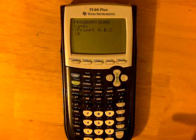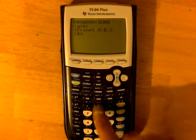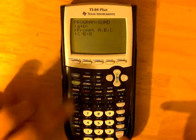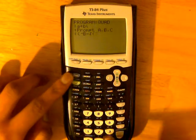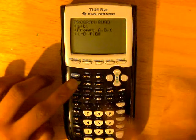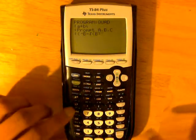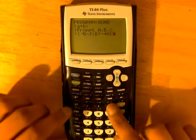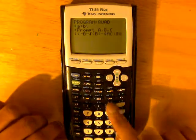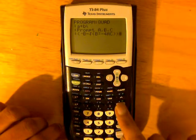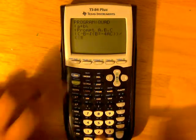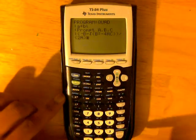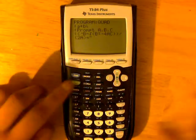Then click Enter. And now, parentheses, negative B minus square root of B squared, so Alpha-B squared, minus 4, Alpha-A, Alpha-C, end parentheses, and then another end parentheses, then divided by 2, another parentheses, 2 Alpha-A, end parentheses. And then we're going to be storing it, so our button's right here, into D, so Alpha-D.